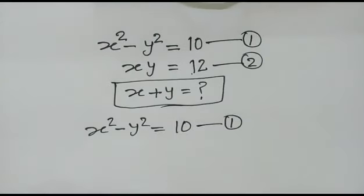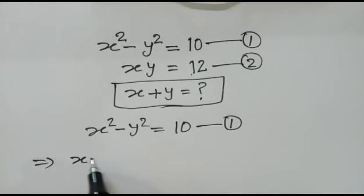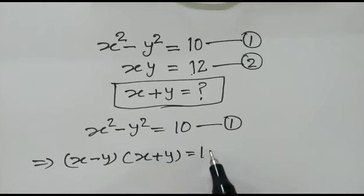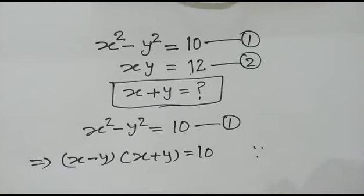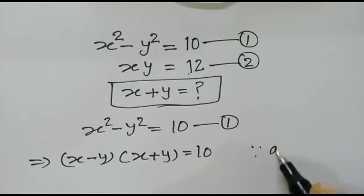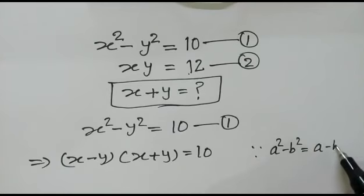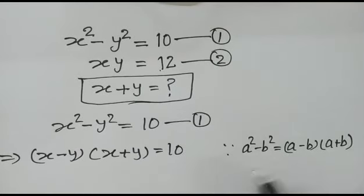Taking equation 1, we can write x squared minus y squared as (x minus y)(x plus y) equals 10, using the algebraic identity a squared minus b squared equals (a minus b)(a plus b).